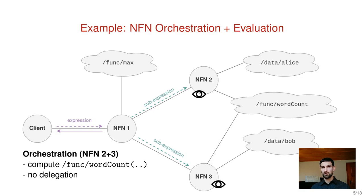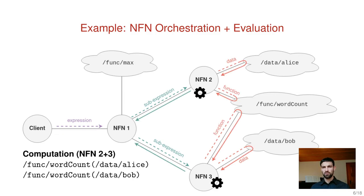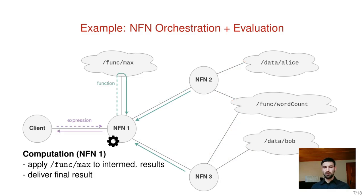NFN nodes 2 and 3 decide not to delegate the computation but perform it locally. So they enter the computation phase, first request the data and the functions, and once these are available they apply the function code to the data, pack the produced result into a content object and send it back to NFN1. After receiving the two intermediate results, NFN1 retrieves the function code of the maximum function, applies it to the intermediate results, and returns the final result to the client.